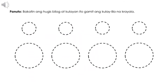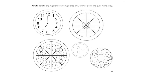Para sa ikalawang gawain, bakasin ang hugis-bilog at kulayan ito gamit ang kulay lila na crayola. Bakasin ang mga larawan na hugis-bilog at kulayan ito gamit ang gusto mong kulay.